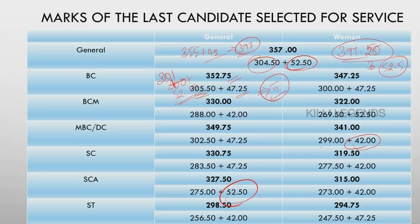If you look at this particular candidate — that is candidate 341 — it is 299 prelims. In the interview it is 42. This is not in the third slab. But if you look at another candidate, it is 289.